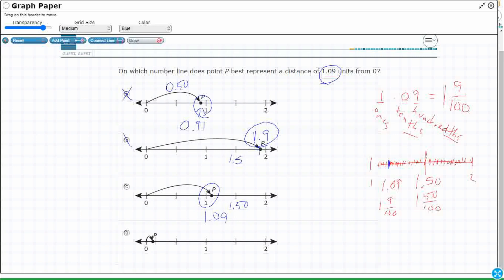And then finally, we've got D. D actually makes sense for 0.09. So it doesn't have the correct whole number, but it does look like a pretty good distance away from 0 to hit that 9 hundredths. It just needs to be 1 and 9 hundredths. So my answer here is C.